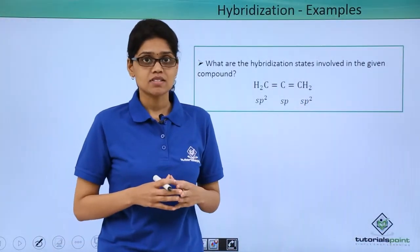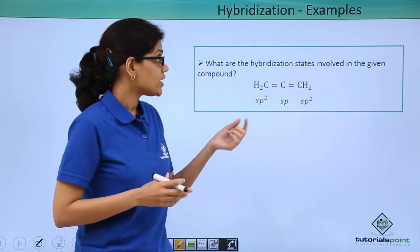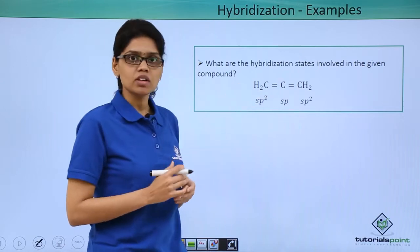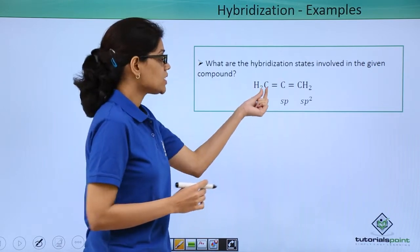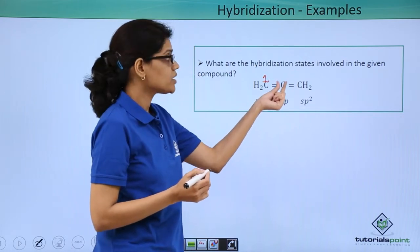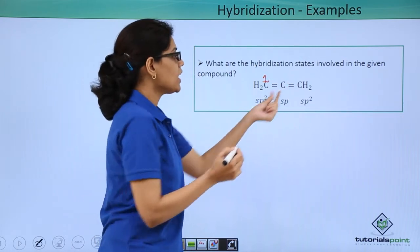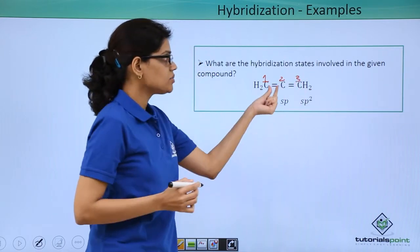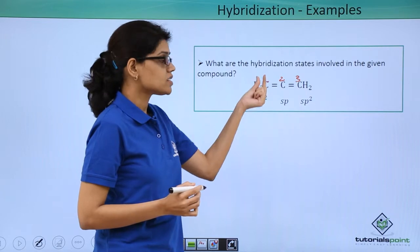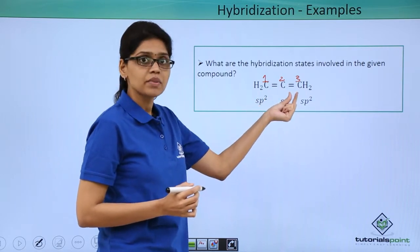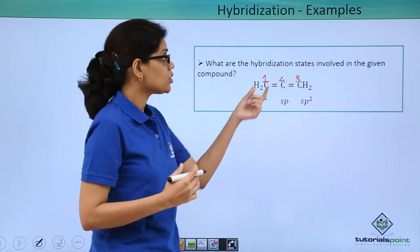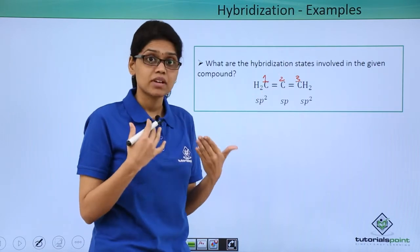In this question we have been asked to identify the hybridization states of various carbon atoms in this particular compound. So we can see that the first carbon atom here is involved in a double bond with this carbon. If we name these carbon atoms as C1, C2 and C3 we can see that there is a double bond between C1 and C2 and between C2 and C3. So whenever we have a double bond how do we exactly see which hybridization state it is?